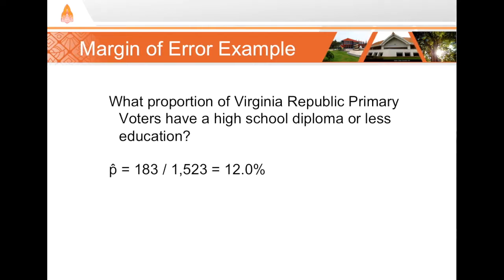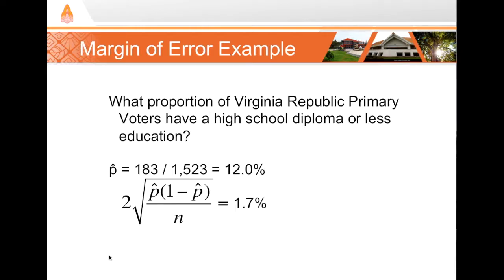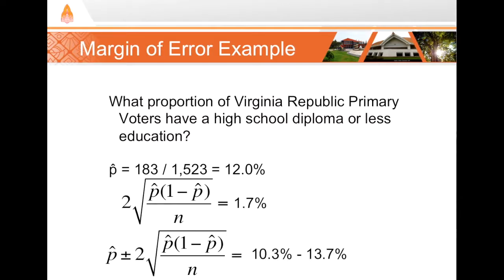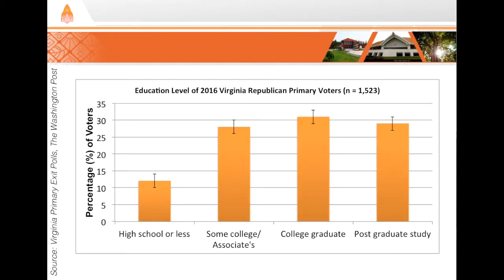Next we compute two times the standard error. Inserting 0.12 for p-hat and 1,523 for n into our formula, we find that two times the standard error is 1.7%. Adding and subtracting that from the sample proportion, we find the true population proportion is likely between 10.3% and 13.7%. We can even put those results into a chart and add error bars in Excel to visually illustrate the uncertainty from sampling variability.